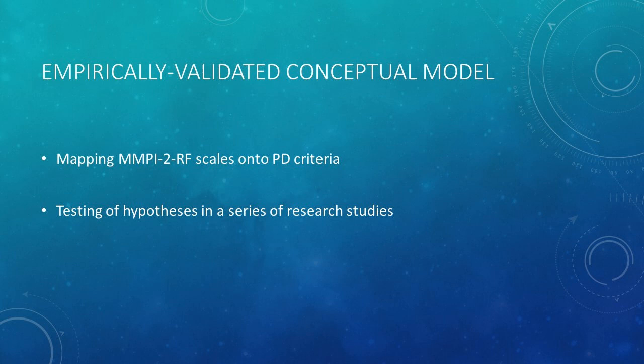This is based on a conceptual model I primarily developed, with significant input from Dr. Mike Bagby from the University of Toronto and Professor Jan Kemphaus at the University of Amsterdam. The second step was to validate the model. We tested a series of hypotheses about what MMPI-2-RF scales should be associated with what personality disorders, published in a series of research studies. We have a well-validated conceptual model, though there are some instances where hypothesized scales haven't been supported — and I'll make that clear as we go through.